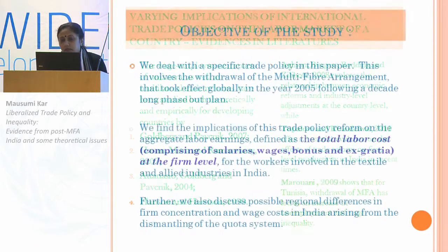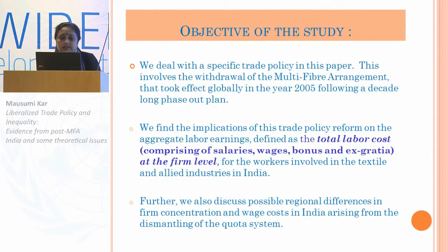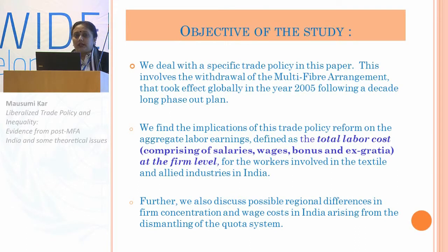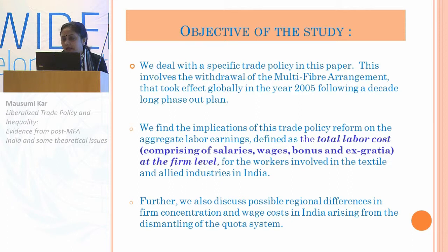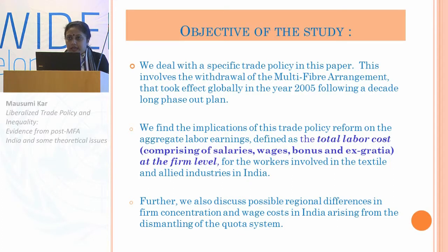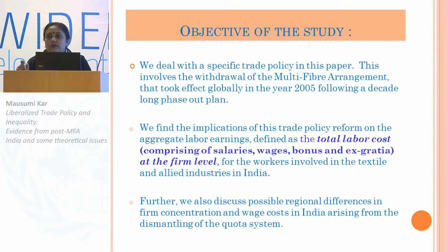Our objective is that we deal with a specific trade policy in this paper — the withdrawal of the Multi-Fiber Arrangement, which controlled or monitored international trade in textiles and apparels for two to three decades. Since 1995, it was decided by the WTO that it should be phased out globally and integrated into the GATT, and it took place over a decade-long phase-out plan.